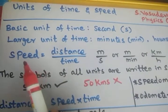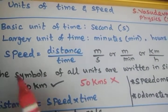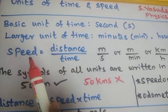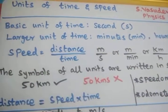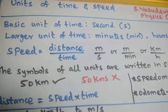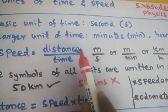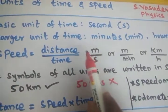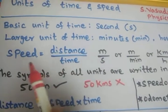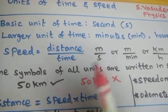As we already studied in previous sessions, speed is defined as distance divided by time — total distance covered by total time taken. The unit of distance is length, which is measured in meters, and time is measured in seconds, so the unit of speed is meter per second.